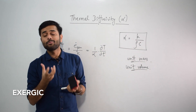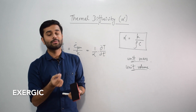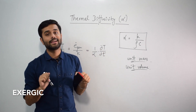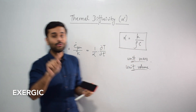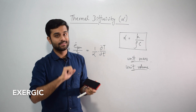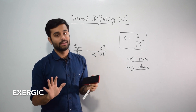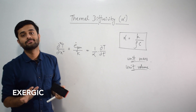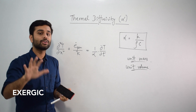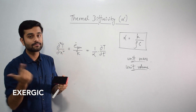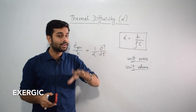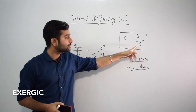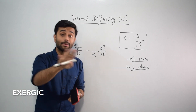The denominator tells how much heat will be required to increase the temperature of a unit volume by 1 degree Celsius. So just as thermal conductivity gives a feel of how fast heat is propagating, this ratio gives a feel of how fast the temperature is increasing. For a lower value of alpha — when the denominator is high — you require a lot of heat to increase the temperature of any unit volume by 1 degree Celsius. Although the material will propagate heat faster, its temperature won't increase that fast.